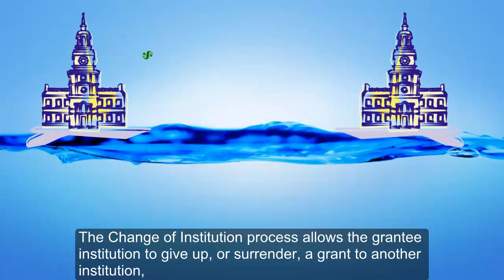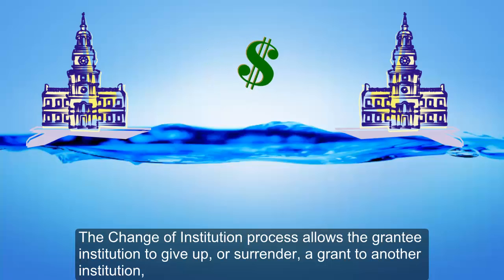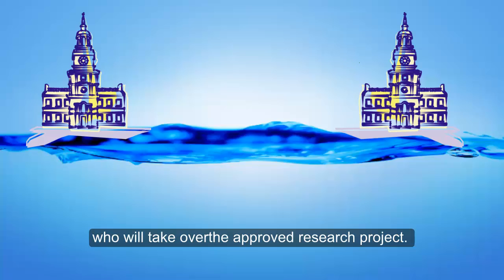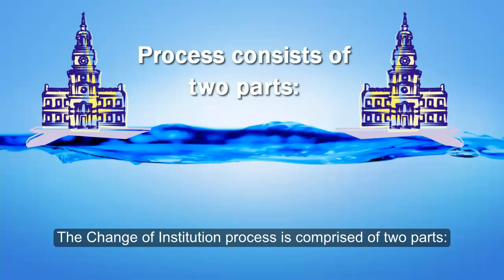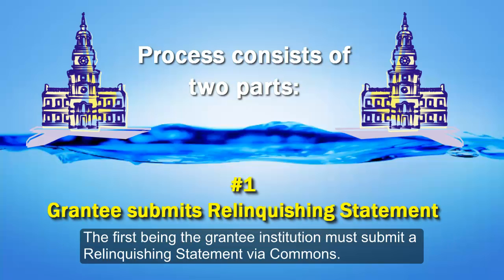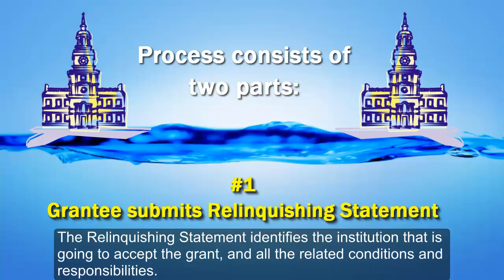The Change of Institution process allows the grantee institution to give up, or surrender, a grant to another institution who will take over the approved research project. The process is comprised of two parts. The first is that the grantee institution must submit a relinquishing statement via Commons. The relinquishing statement identifies the institution that is going to accept the grant and all the related conditions and responsibilities.